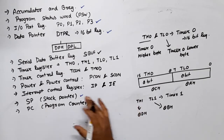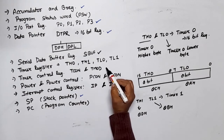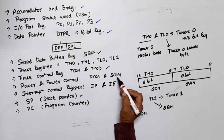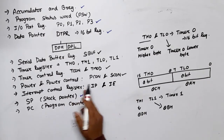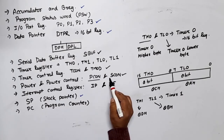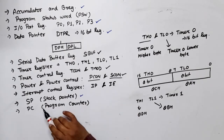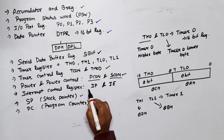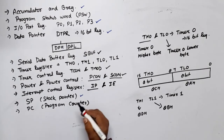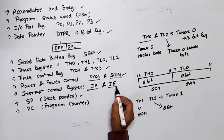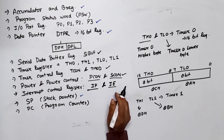Next register is TCON and TMOD — links will be provided in the description box. Next are PCON and SCON — links will also be provided. PCON is used for power control and SCON is used in serial communication for mode control. For interrupt control: IP is the Interrupt Priority register — it decides which interrupt has the highest priority. IE is the Interrupt Enable register — links will be provided for both.